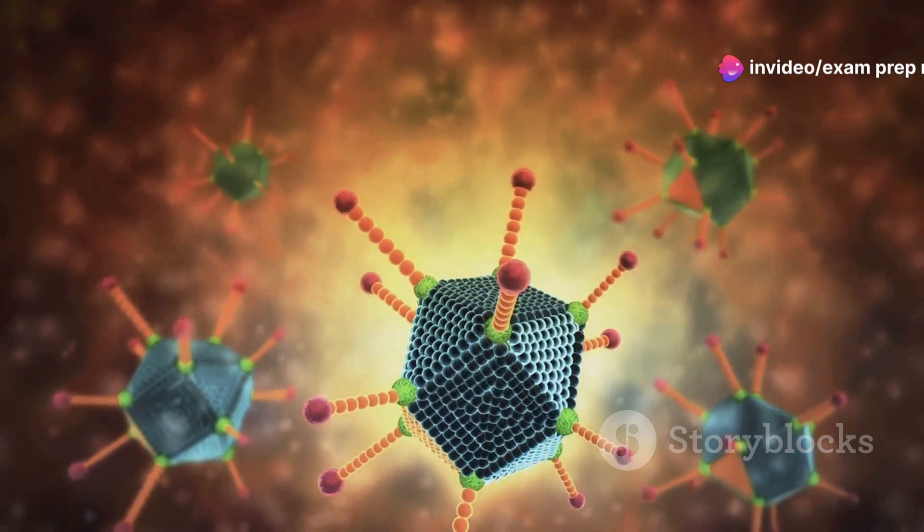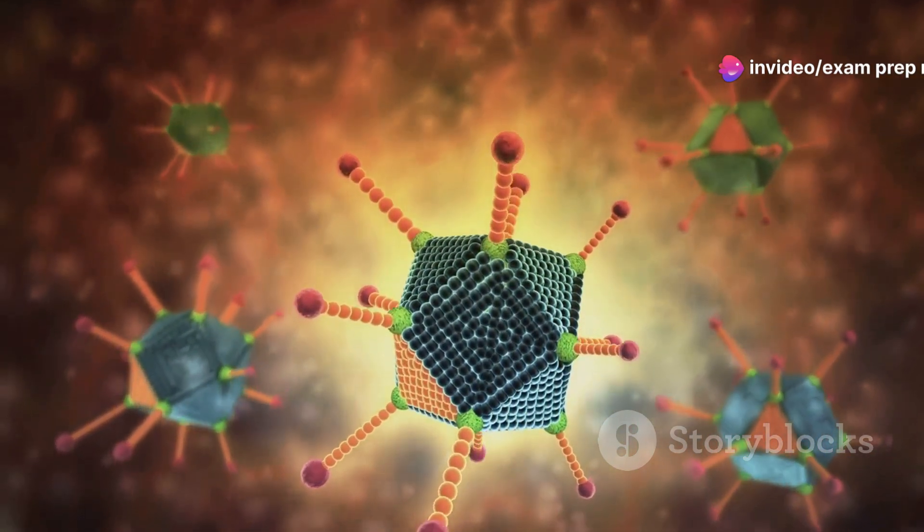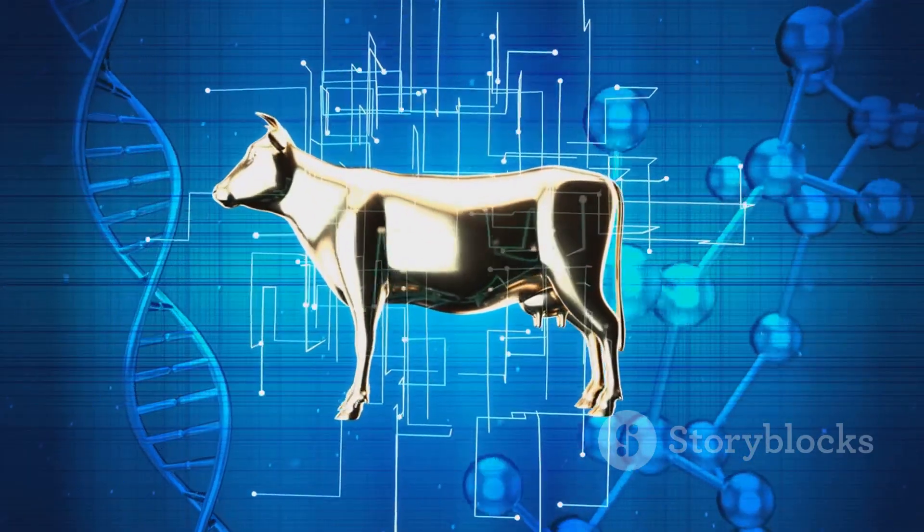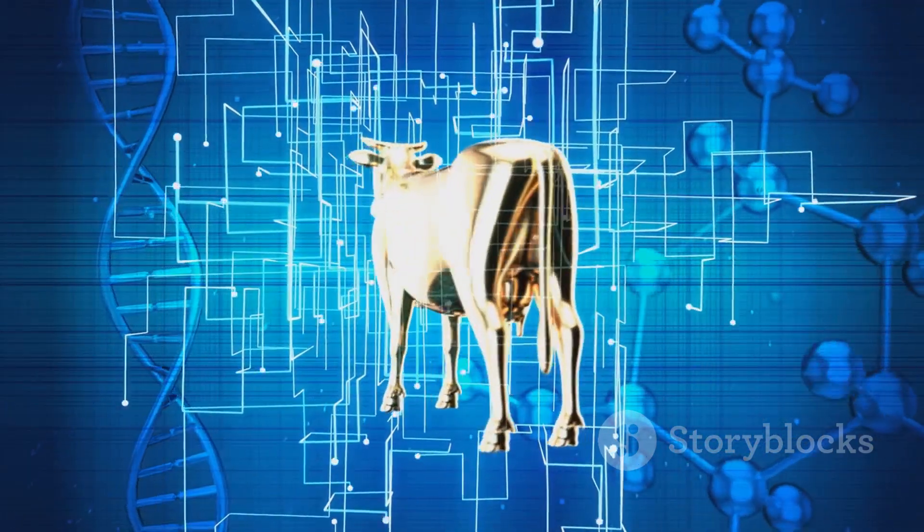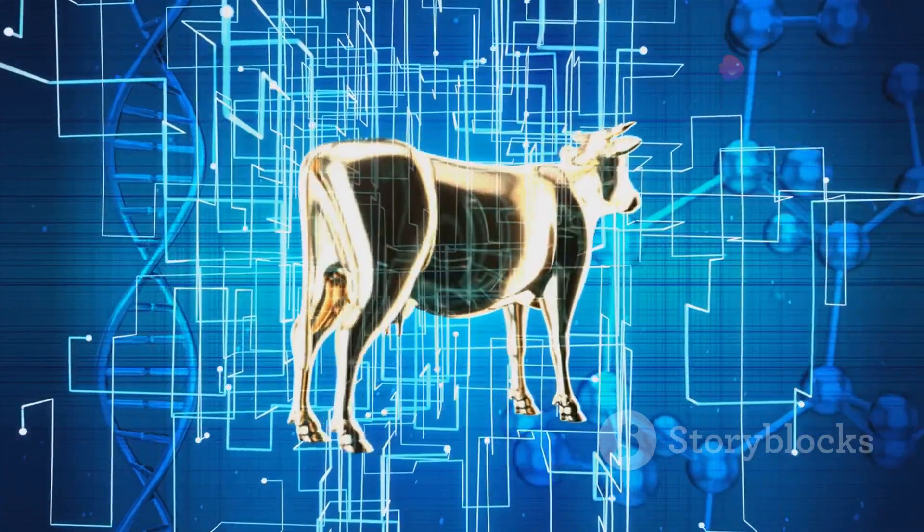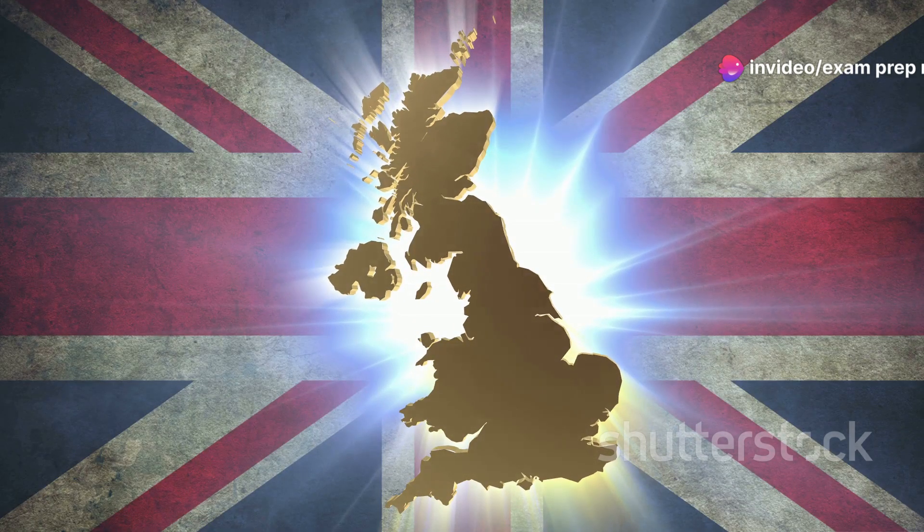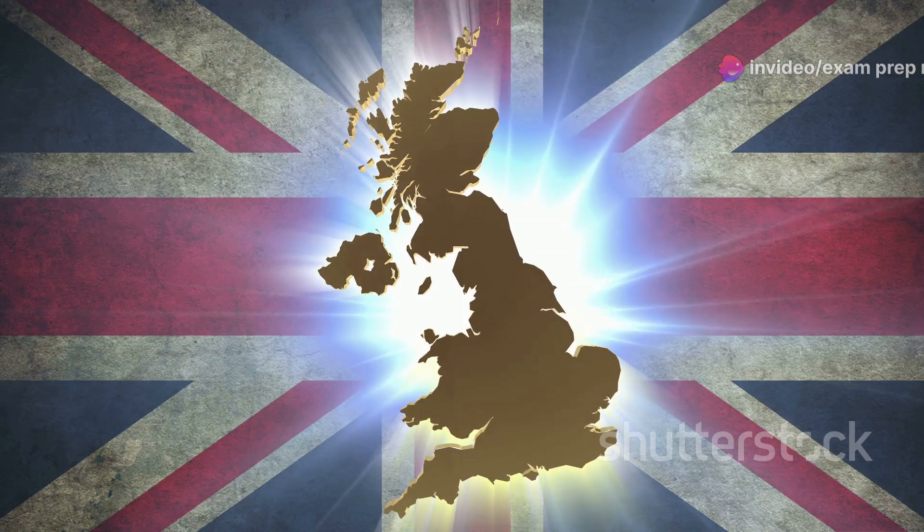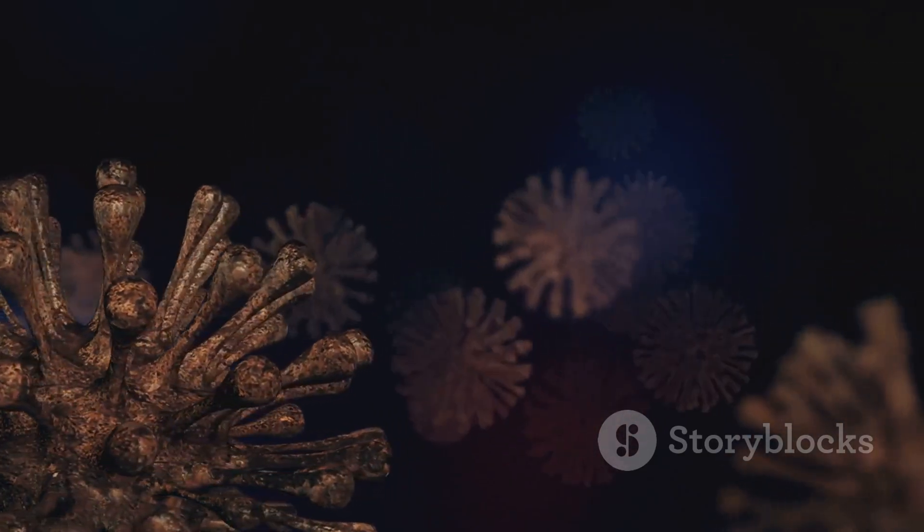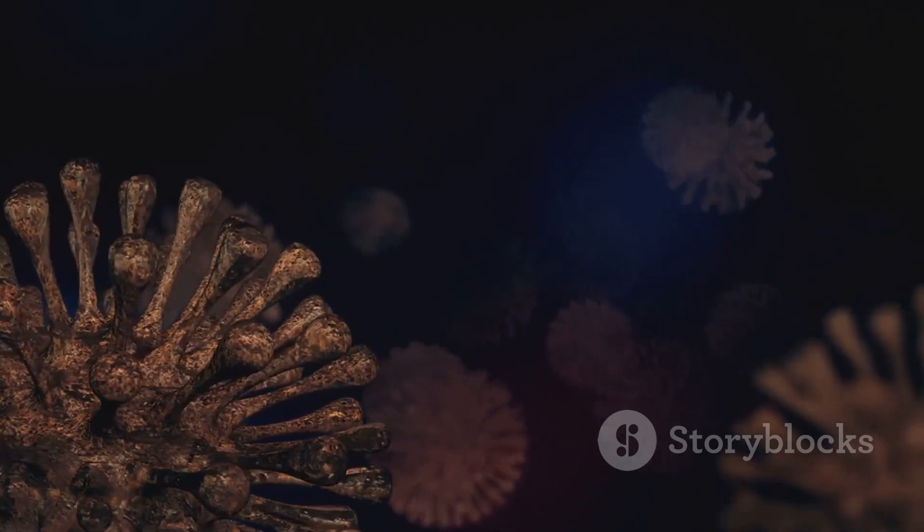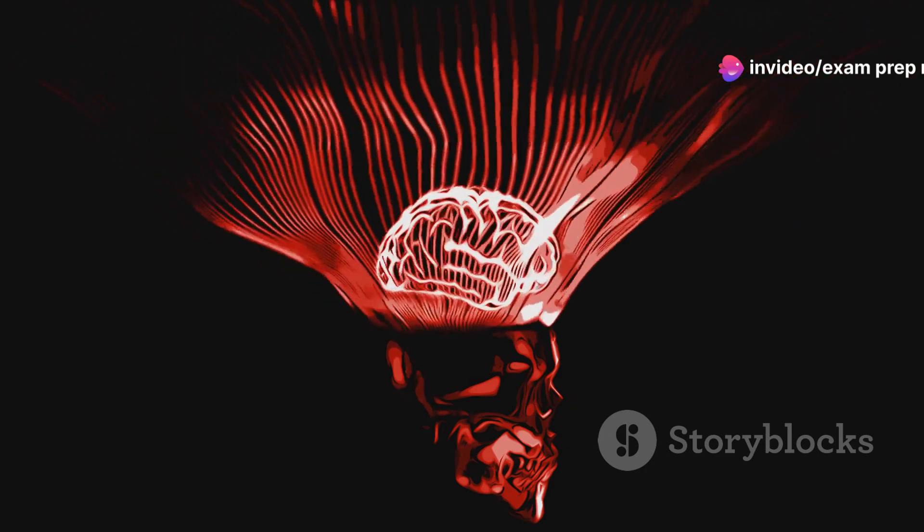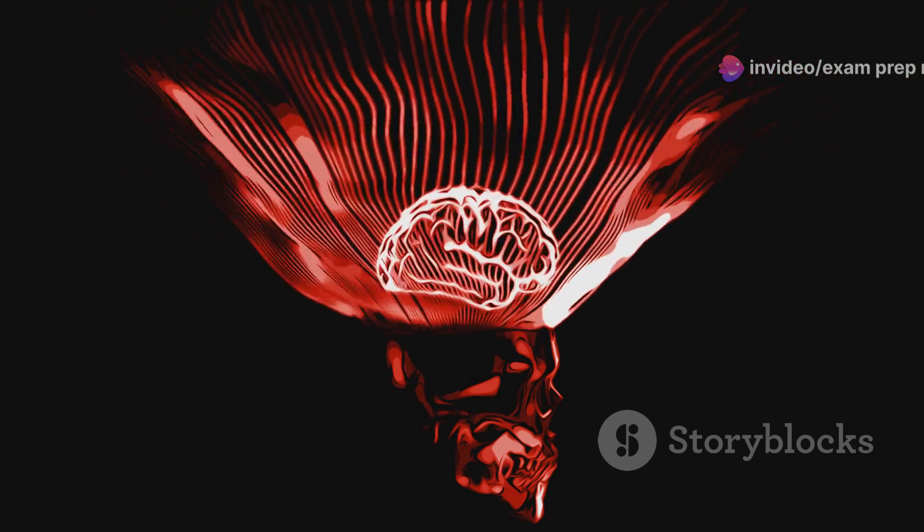Prion diseases are rare but invariably fatal. One well-known example is bovine spongiform encephalopathy, commonly known as mad cow disease. This prion disease devastated cattle populations in the United Kingdom in the 1980s and 1990s. In humans, prion diseases can manifest as Creutzfeldt-Jakob disease, fatal familial insomnia or Kuru. These diseases cause a range of neurological symptoms including dementia, loss of coordination and ultimately death.